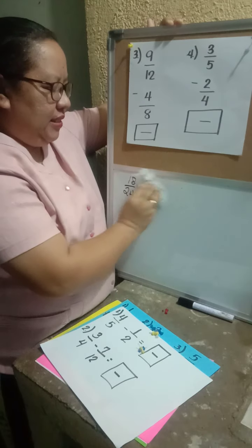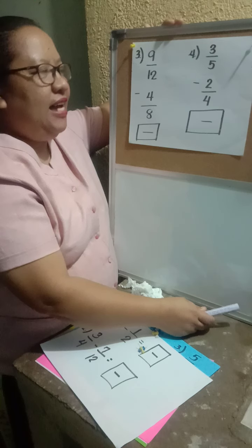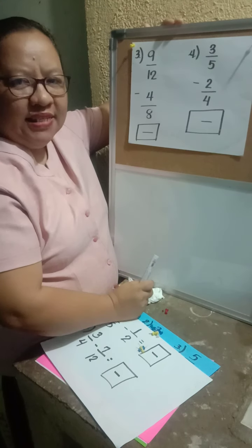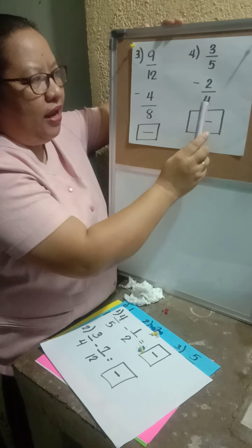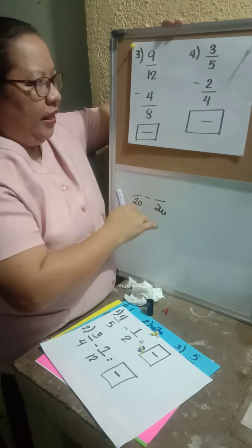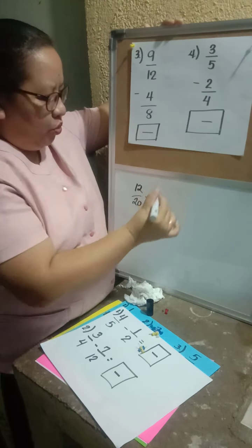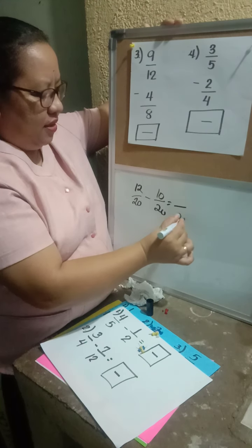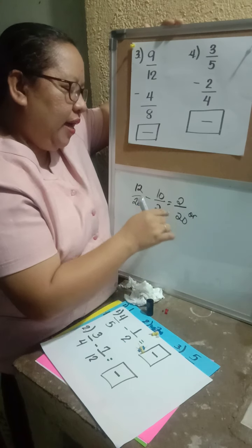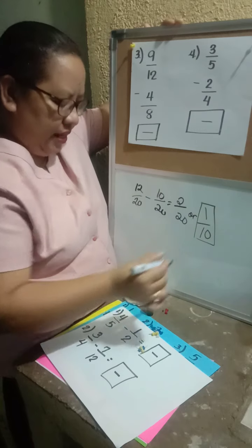Last example: 3/5 minus 2/4. The denominators are 5 and 4 — dissimilar. Multiples of 5: 5, 10, 15, 20... Multiples of 4: 4, 8, 12, 16, 20. The LCD is 20. 20 divided by 5 is 4, times 3 equals 12. 20 divided by 4 is 5, times 2 equals 10. Copy 20 and subtract: 12 minus 10 is 2. The GCF is 2: 2 divided by 2 is 1, and 20 divided by 2 is 10. The answer is 1/10.